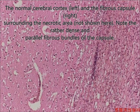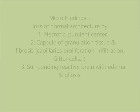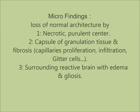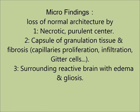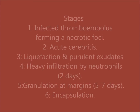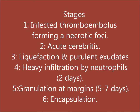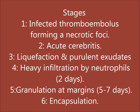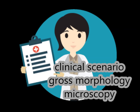In liquefactive necrosis due to bacterial infection, you can find necrosis of the cell, cellular debris, nuclear dust, inflammatory cells — frequently mononuclear cells — and gitter cells, which are foamy histiocytes in the brain. Microscopic findings can be summarized as: loss of normal architecture, necrotic purulent center, capsule of granulation tissue, fibrosis, gitter cells, and surrounding reactive brain with edema and gliosis. The stages include infected thromboemboli forming a necrotic focus, acute cerebritis with liquefaction and purulent exudate, heavy infiltration by neutrophils on the second day, granulation tissue at the margins at 5–7 days, and then encapsulation by fibrous tissue.